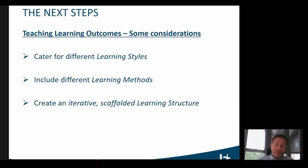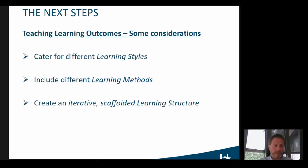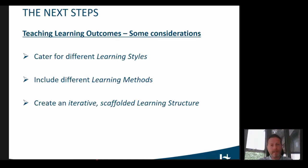In the next steps, when you want to start teaching these learning outcomes, there are various things to take into account. Not everybody wants to learn in the same way, so we had to provide tasks and materials that cater for different learning styles. Not everybody is happy with the same learning or teaching method, and there's also a certain hierarchy in learning methods. So we also wanted to provide various different methods, and in our instructional structure, we wanted to make sure the activities became more challenging and complex as they progressed — an iterative, scaffolded structure.